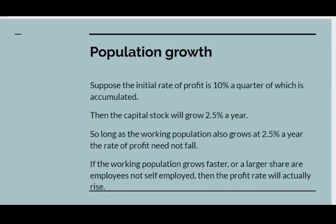The next thing that may alter is the rate of population growth. Suppose the initial rate of profit is 10%, of which a quarter is being accumulated — that means the capital stock will be growing at 2.5% a year. Now suppose the working population also grows at 2.5% a year. Then the rate of profit wouldn't fall, because the ratio of capital to labour remains the same, and assuming the division of the social product between labour and capital doesn't change, the rate of profit will be stable. If the working population actually grows faster, or a larger share are employees rather than self-employed, the rate of profit can actually rise.